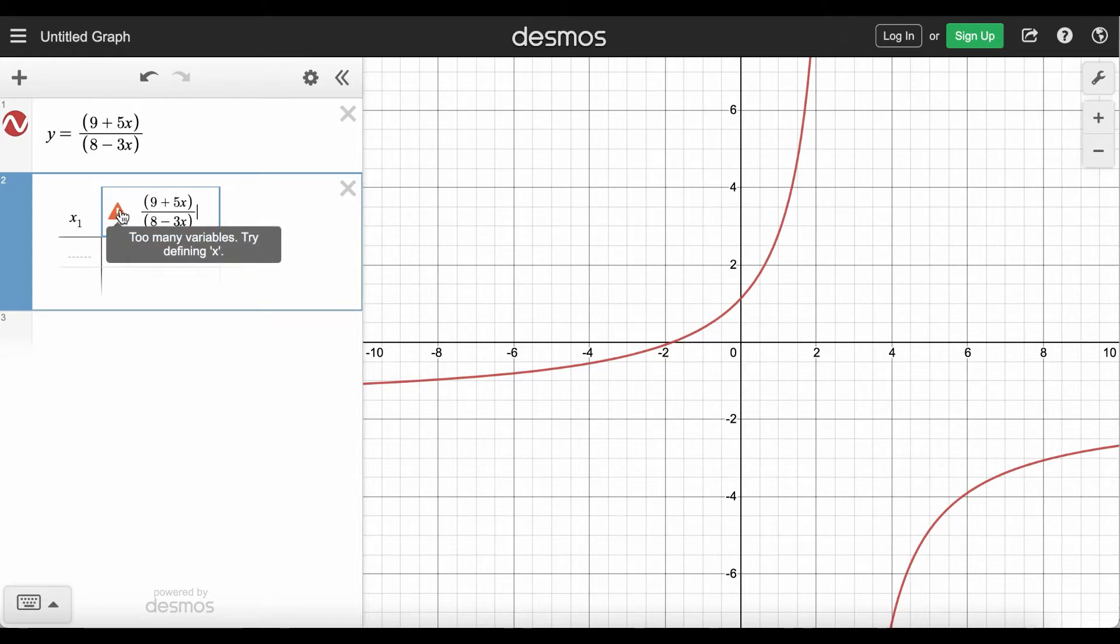Now we get this little warning symbol because our input variable is not x, it's x sub 1. So we have to make every x in our function be an x sub 1 as well. So I'll click to the right of x and just type a 1 and it automatically goes into the subscript. Likewise for the x in the denominator, I click to the right of it, type a 1 and it automatically makes a subscript of 1.